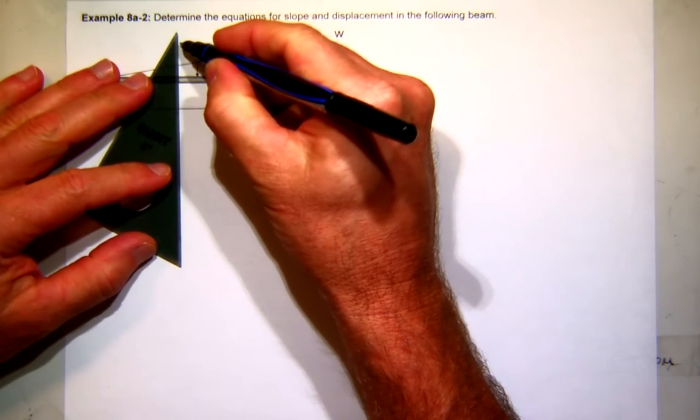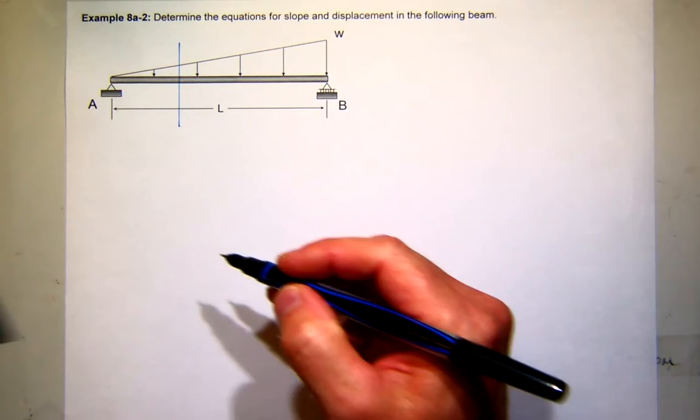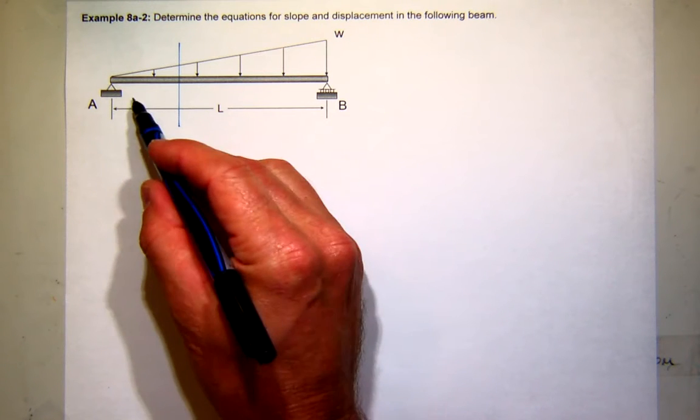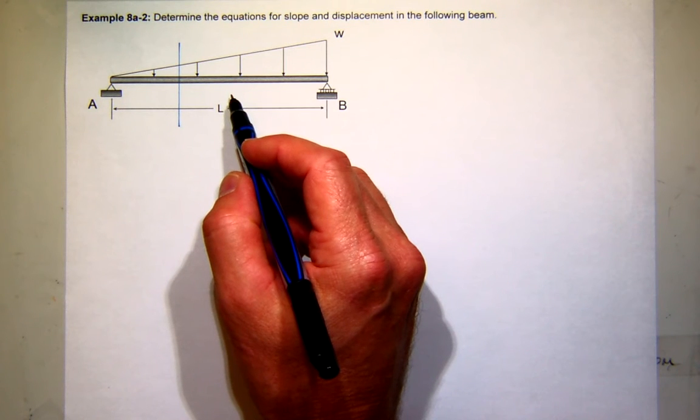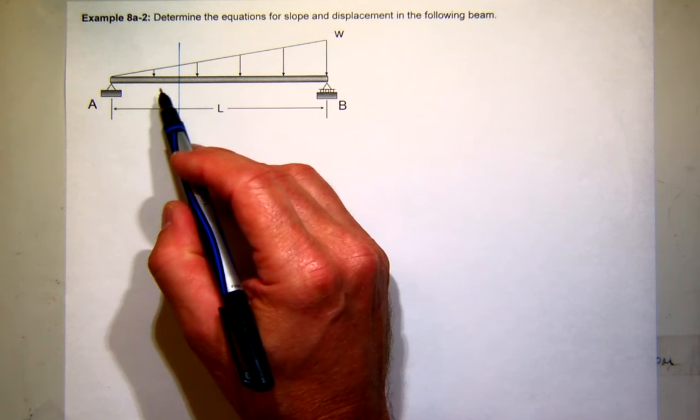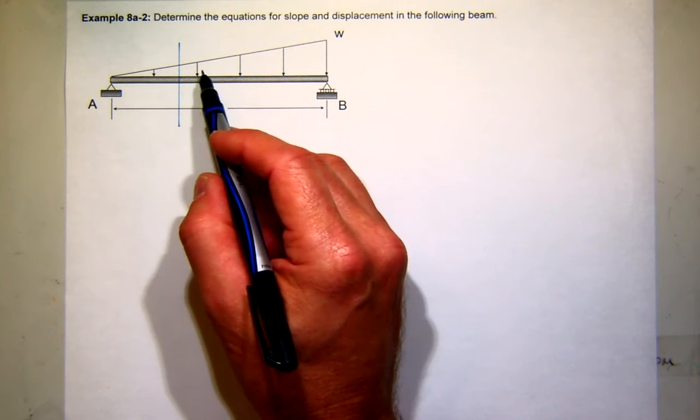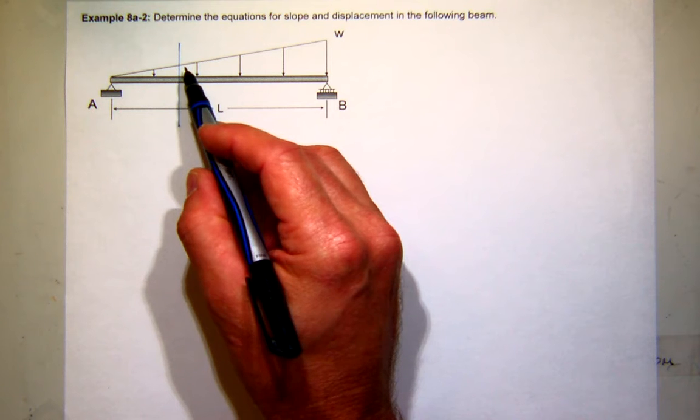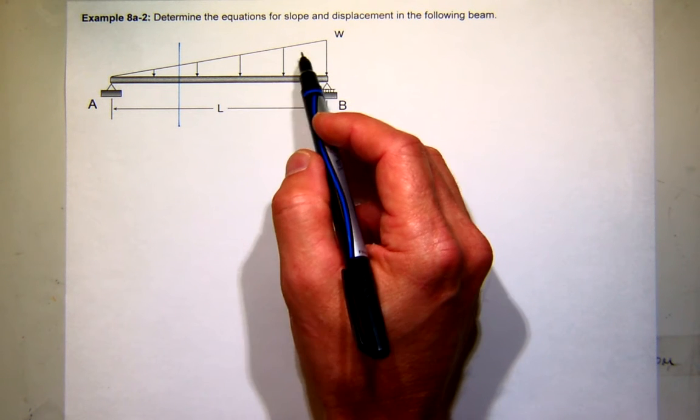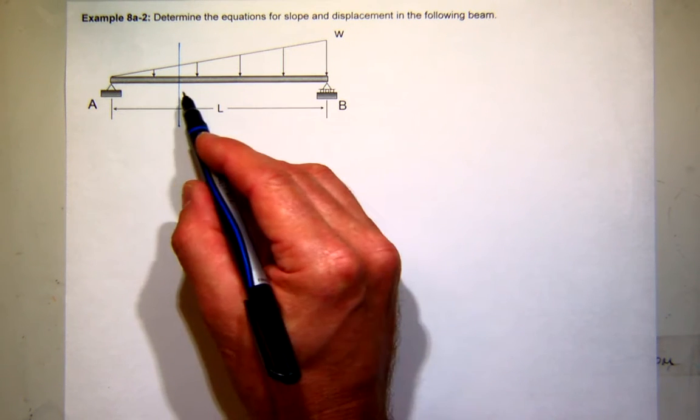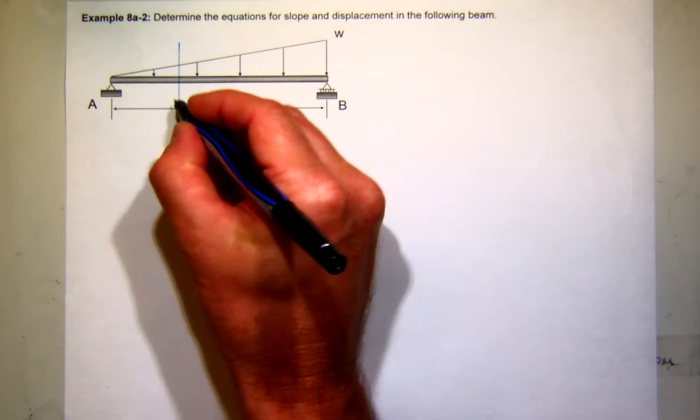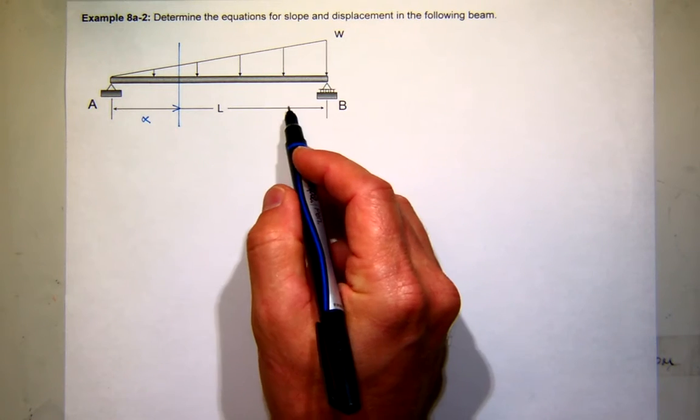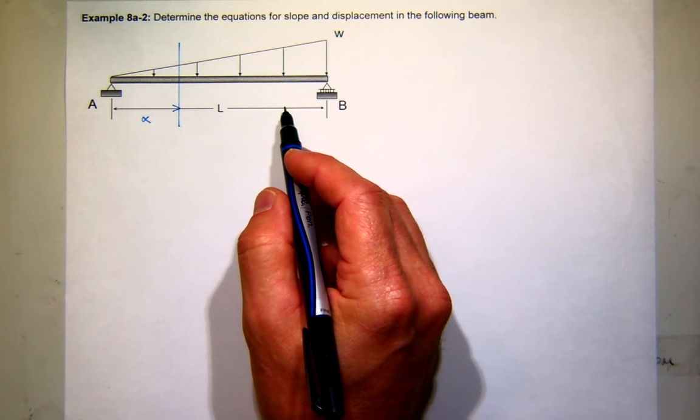So let's imagine then writing the moment equation. We'll use method of sections. Let's say I cut the structure right here. Which side is going to be easier for us to work with, the left side or the right side? I think the right side. I'm sorry, the left side. The right side is trapezoidal. That would be a little more challenging. You'd probably break that down into two forces, one with the rectangle, one with the triangle. And then you'd be dealing with lengths that are going to be, since this distance is x, these would be L minus x. The algebra would be a little more clumsy.